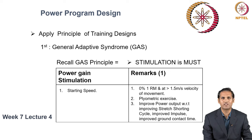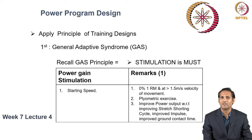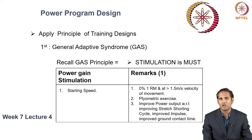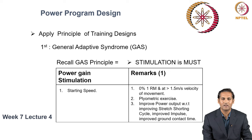To touch base on each type of stimulation: starting speed stimulation has an intensity of 0% of 1RM and the velocity of movement is greater than 1.5 meters per second. The drills and exercises that incorporate starting speed are plyometric exercises. You improve power output by improving your stretch shortening cycle, your impulse, and your ground contact time. These are the ultimate outcomes and adaptations you get when you use starting speed type of stimulation.